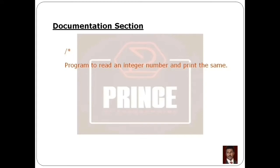The documentation section uses an inline description. When we finish the description section, we close it with an asterisk symbol and forward slash. The multiline comment starts with slash-star and ends with star-slash, completing the documentation section.